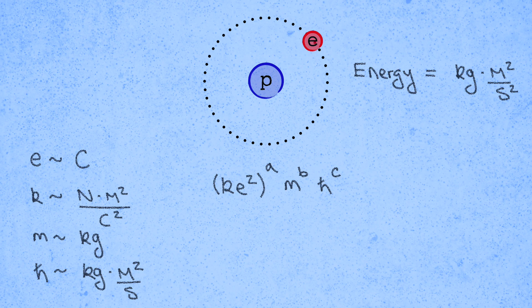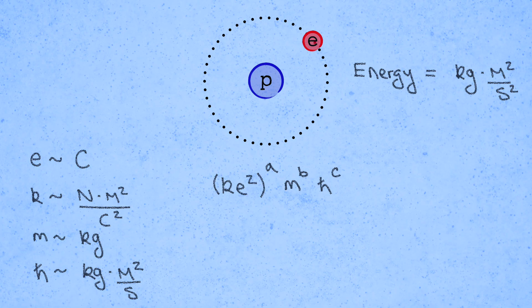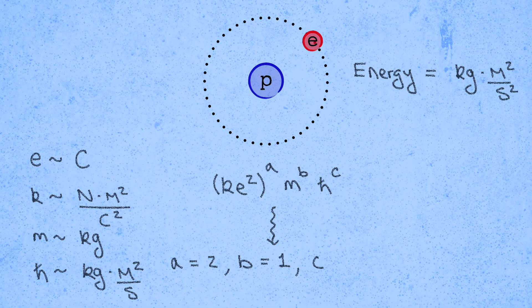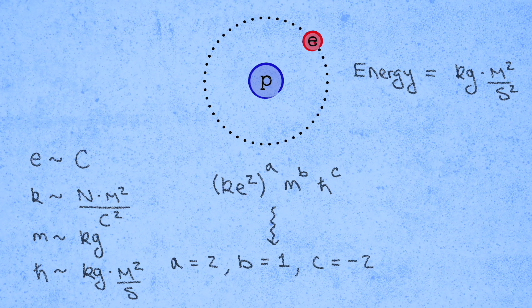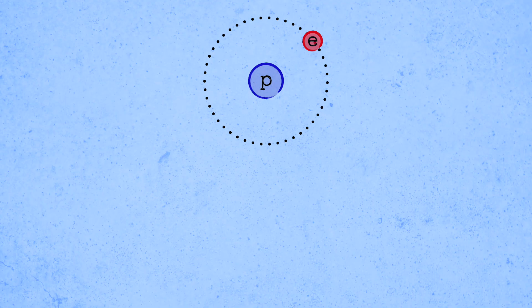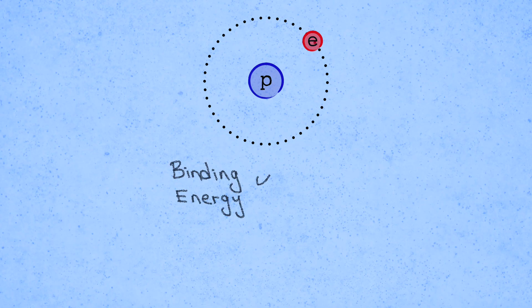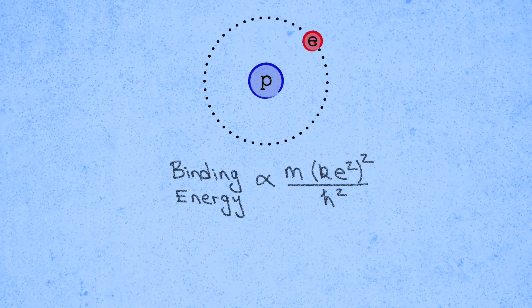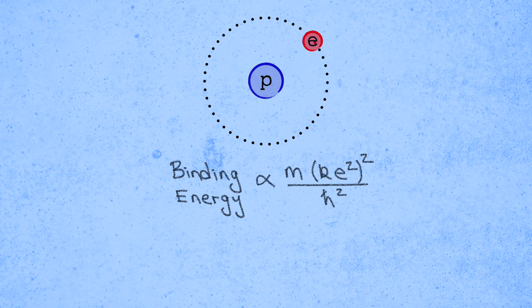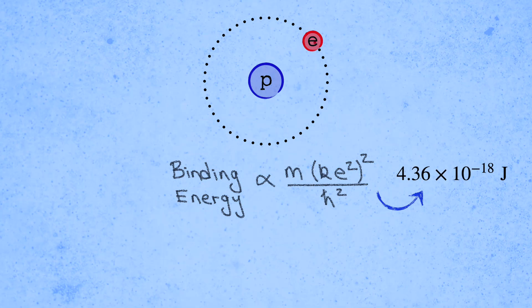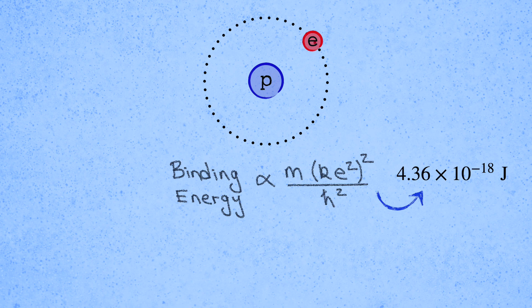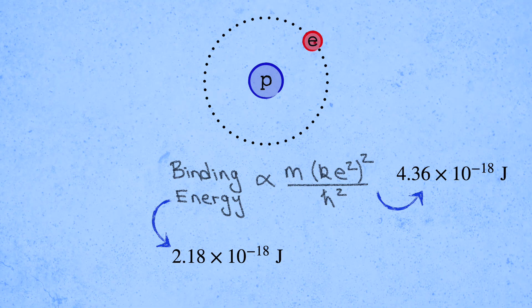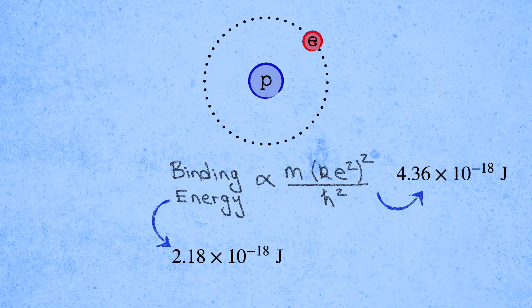I'll leave that for you to do for practice. I also show you how to work it out in the notes for this video which you can get at the link in the description. I'll show you there that we have to set a equals 2, b equals 1, and c equals minus 2. Therefore, dimensional analysis tells us that the binding energy of the hydrogen atom must be proportional to m times ke squared quantity squared divided by h-bar squared. Plugging in the numbers, this gives about 4.36 times 10 to the minus 18 joules. The experimental value is meanwhile about 2.18 times 10 to the minus 18 joules. So it seems our formula should come with a factor of half.